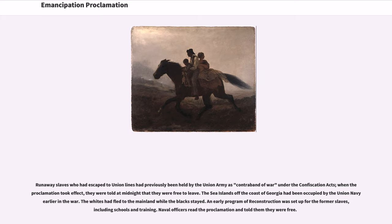Runaway slaves who had escaped to Union lines had previously been held by the Union Army as contraband of war under the Confiscation Acts. When the proclamation took effect, they were told at midnight that they were free to leave. The Sea Islands off the coast of Georgia had been occupied by the Union Navy earlier in the war. The whites had fled to the mainland while the blacks stayed. An early program of reconstruction was set up for the former slaves, including schools and training. Naval officers read the proclamation and told them they were free.